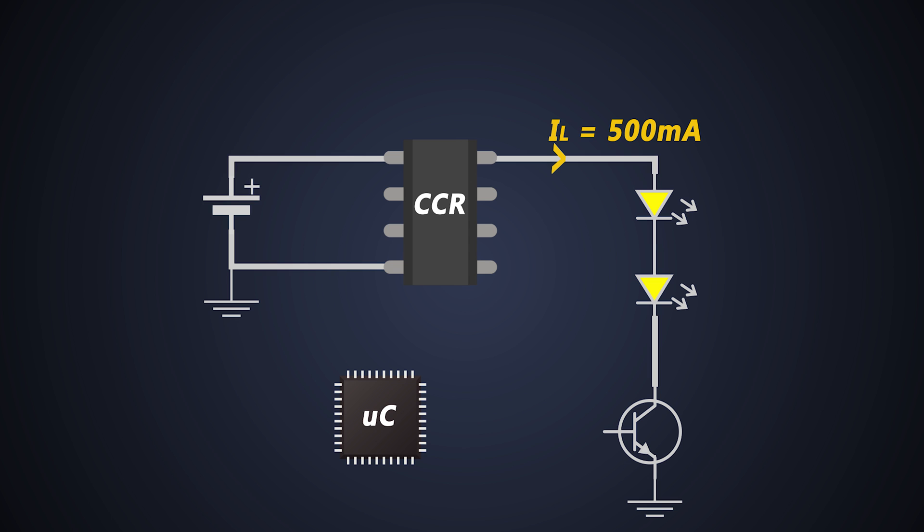Here we have to connect a BJT of low saturation VCE as a low side switch. So basically, with just a small voltage as low as 5V, we can control anything. Cool, isn't it?